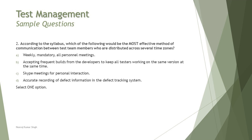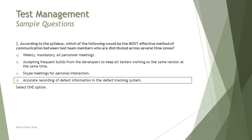But if you look at option D: accurate recording of defect information in the defect tracking system — yes, that's the best way to keep track of all correct information from different time zones, so that when another zone works on it they get the relevant information. Tracking and logging of information is one of the key areas. So the right answer is D.